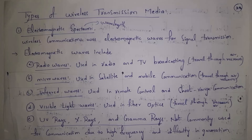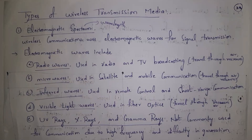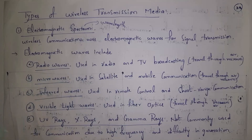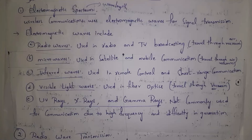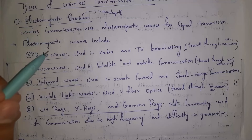Wireless communication uses electromagnetic waves for signal transmission — waves we cannot see. Electromagnetic waves include radio waves, used in radio and television broadcasting; microwaves, used in satellite and mobile communication; infrared waves, used in remote controls and shorter range communications; visible light waves, used in fiber optics; and UV rays, X-rays, and gamma rays, which are not used for communication.